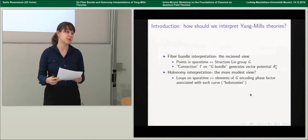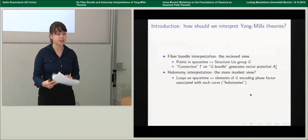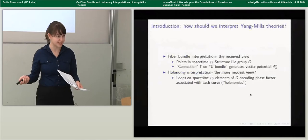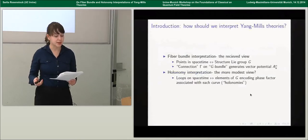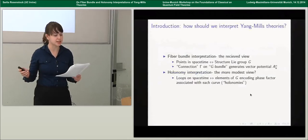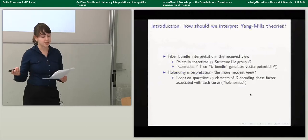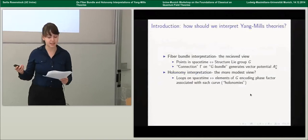There appear to be costs associated with each interpretation. In the holonomy interpretation, properties of a system are non-local in the sense that they're related to curves on spacetime rather than individual spacetime points or localized regions. On the other hand, the fiber bundle interpretation is often said to postulate strictly more structure than is necessary to describe Yang-Mills theories, whereas the holonomy interpretation doesn't have this kind of excess structure. This talk is going to focus on that latter point — I'm going to try to make that criticism more precise.